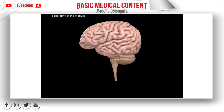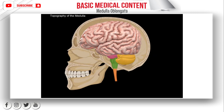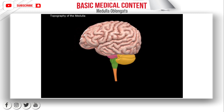The medulla is here, lying above the spinal cord and below the pons. The medulla also connects with the cerebellum, so you'll find the cerebellum behind the superior part of the medulla oblongata. All of these structures lie within our cranial cavity, within the skull. Topographically, the medulla starts at the level of the foramen magnum, which is the distinct border between the spinal cord and the medulla. In the front, the medulla lies in the clivus, which is the anterior portion of the occipital bone. The length of the medulla oblongata is about two and a half centimeters.